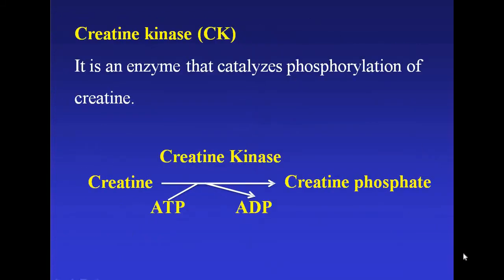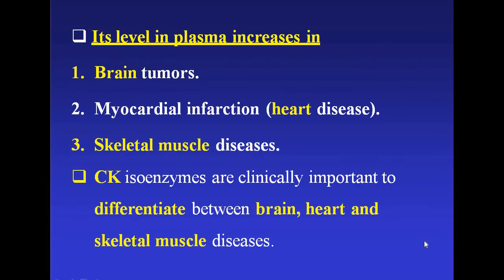The second isoenzyme example is creatine kinase. It is an enzyme that catalyzes the phosphorylation of creatine, forming creatine phosphate. Its level in plasma increases in brain tumors, myocardial infarction, which is a heart disease, and skeletal muscle diseases. CK isoenzymes are clinically important to differentiate between brain, heart, and skeletal muscle diseases.